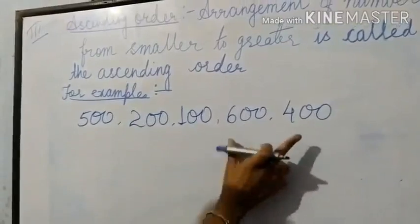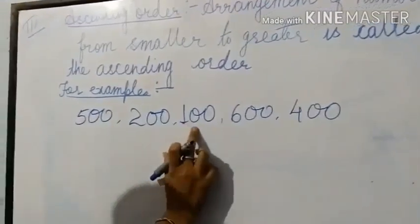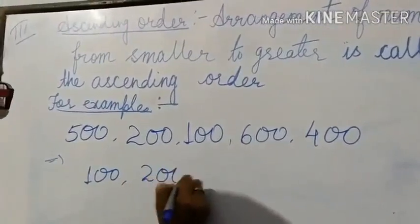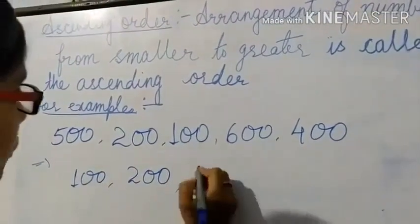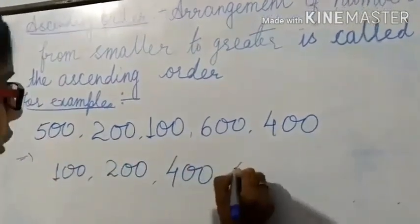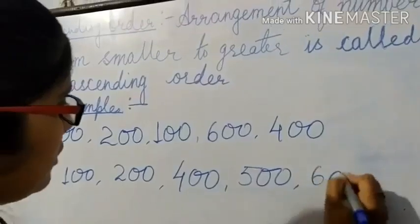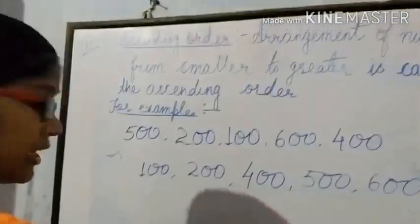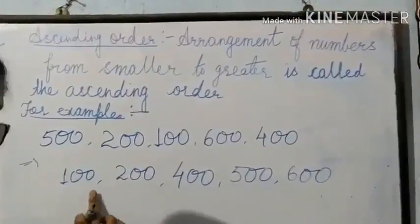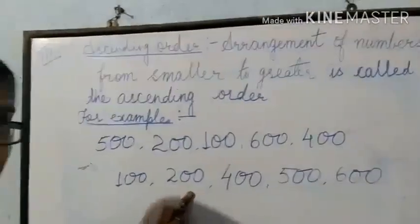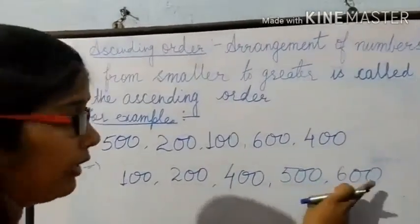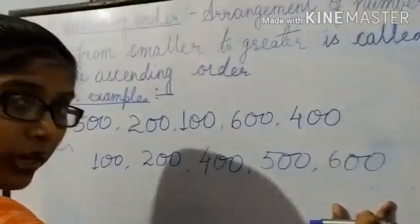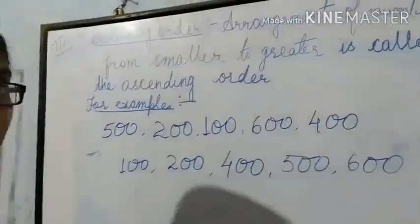Let us look at the 100's place. So the order is: 100, then 200, then 400, then 500, and then 600. This is the ascending order. The number with the least 100's value — which is 100 — will come first, then 200, then 400, then 500, and then 600 at last.